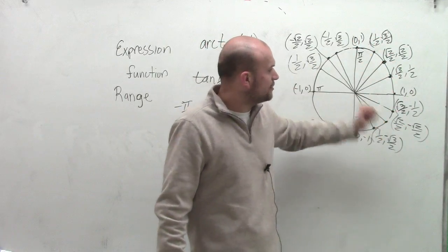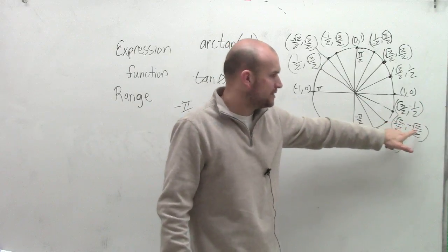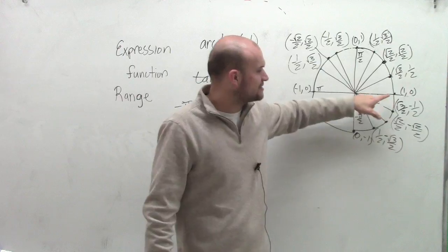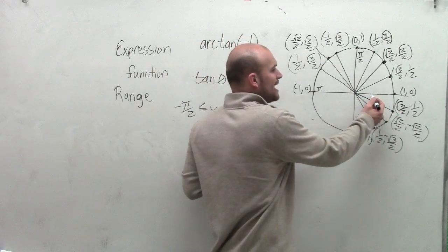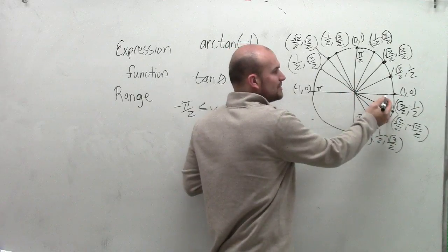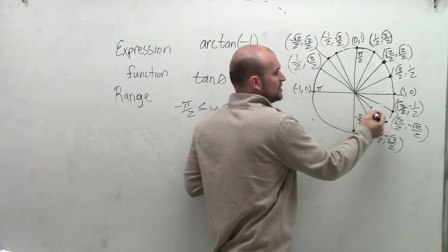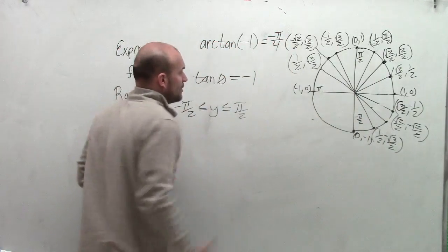So I look at my fourth quadrant, and the only point that equals negative 1 is when I have negative square root of 2 over 2 divided by square root of 2 over 2. This angle, we're not going to go in the positive direction because that would fall outside the range. So we take the negative version of the angle, which is negative pi over 4.